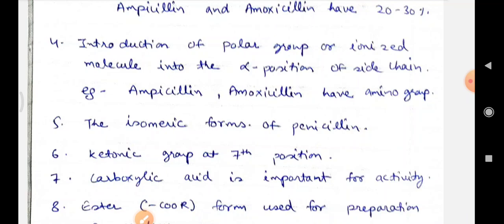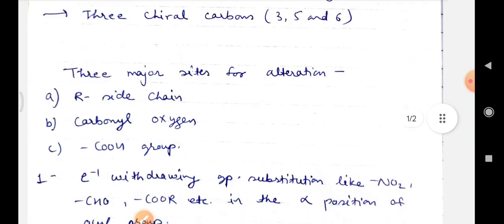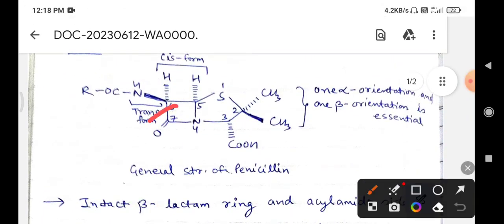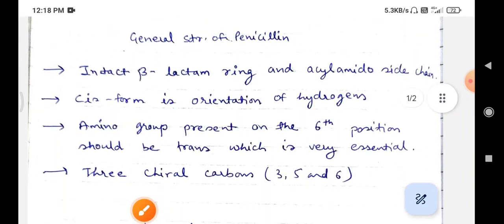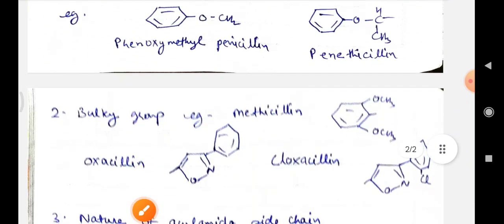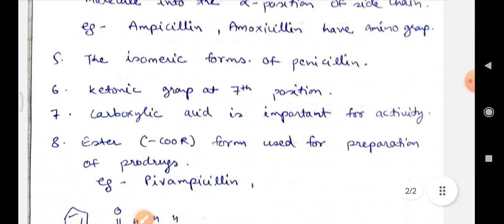Coming to the carbonyl oxygen in the structure, what variation we can do? The highly reactive ketonic group at 7th position is also essential for the activity. It is ready for nucleophilic attack because the lone pair of the nitrogen atom is not involved in the resonance. So it increases the stability of the ring and provides better stability and activity to the penicillin.